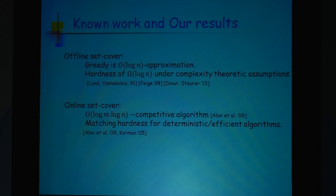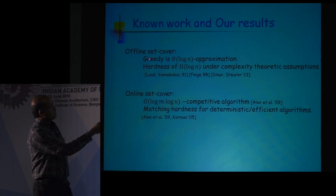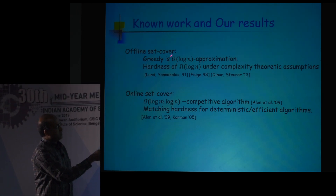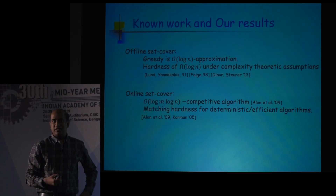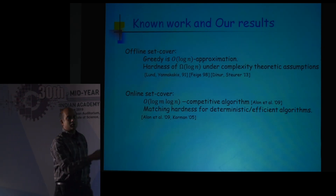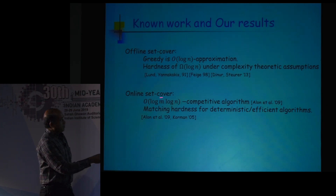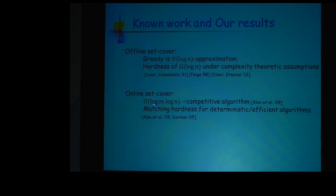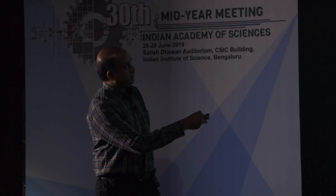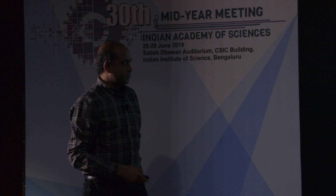There is a lot of interesting theoretical work here. What is known — something I will not prove — is that the greedy algorithm is log n approximation, meaning if the optimum were 10 sets you would be using 10 times log n sets, and this is the best possible. In the online set cover, where you do not know the entire future, you have to incur an additional factor of log m, where m is the number of sets. We have shown that you can basically achieve results as good as the offline problem in this model, matching the known results for the setting where you knew the future.